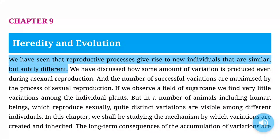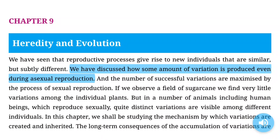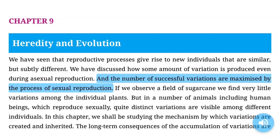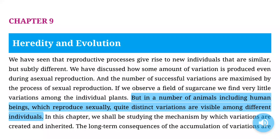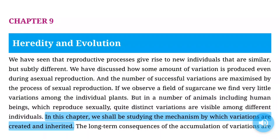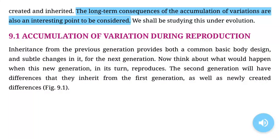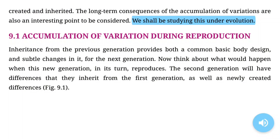Chapter 9: Heredity and Evolution. We have seen that reproductive processes give rise to new individuals that are similar but subtly different. We have discussed how some amount of variation is produced even during asexual reproduction, and the number of successful variations are maximized by the process of sexual reproduction. If we observe a field of sugarcane, we find very little variation among the individual plants. But in a number of animals, including human beings, which reproduce sexually, quite distinct variations are visible among different individuals. In this chapter, we shall study the mechanism by which variations are created and inherited. The long-term consequences of the accumulation of variations are also considered under evolution.